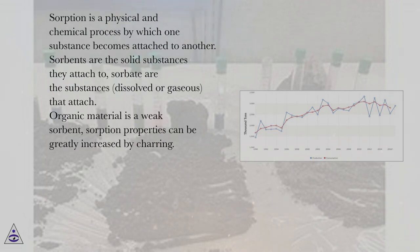Sorbents are the solid substances they attach to. Sorbate are the substances, dissolved or gaseous, that attach. Organic material is a weak sorbent. Sorption properties can be greatly increased by charring.